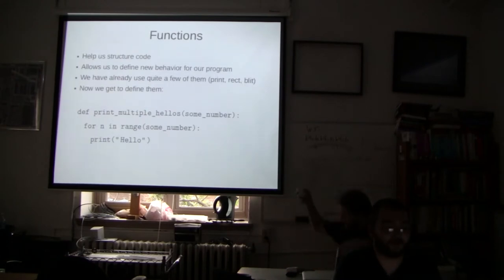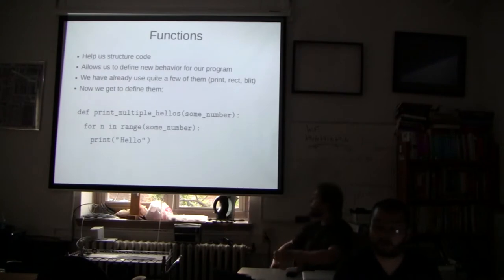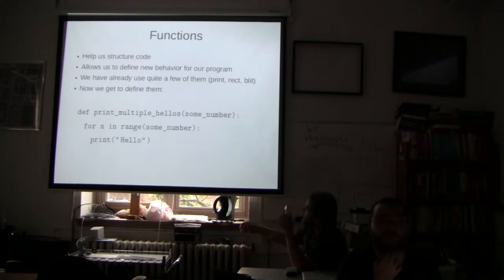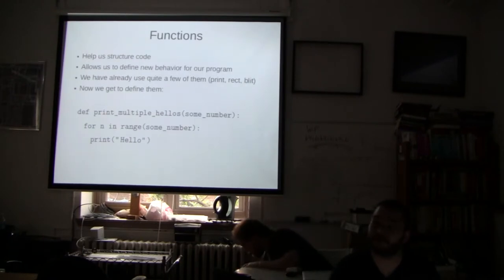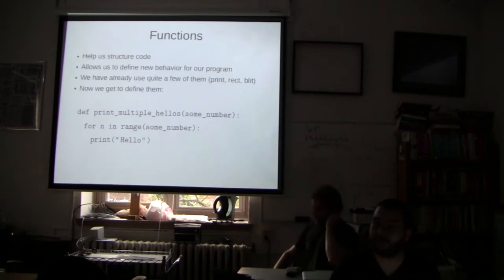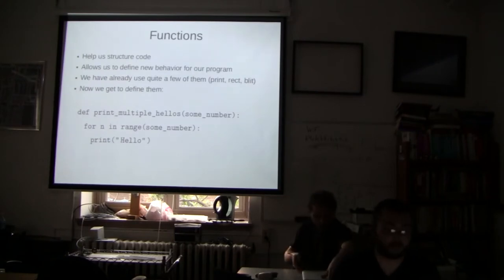Functions are a way to structure code — they allow new behavior for the program. We've used a bunch already. Now we get to define them. The keyword `def` in Python means whatever is following is a function definition. `print_multiple_hellos` is the name of the function; `some_number` is an argument — just something you pass to a function. Wherever `some_number` appears in the code block beneath the def call, it's going to replace `some_number` with whatever value you passed.